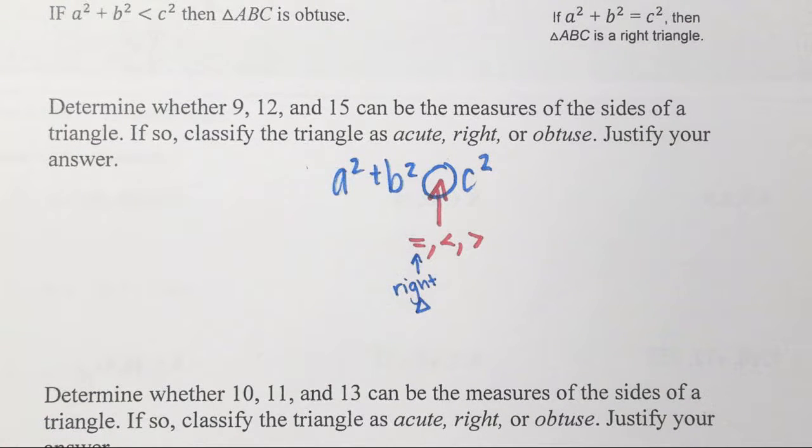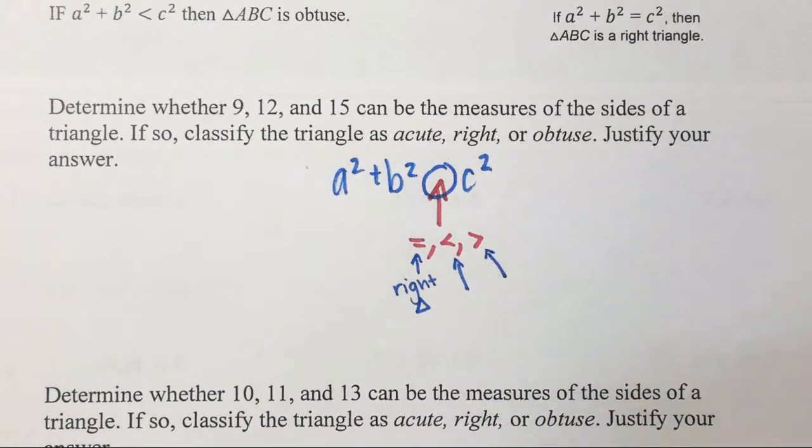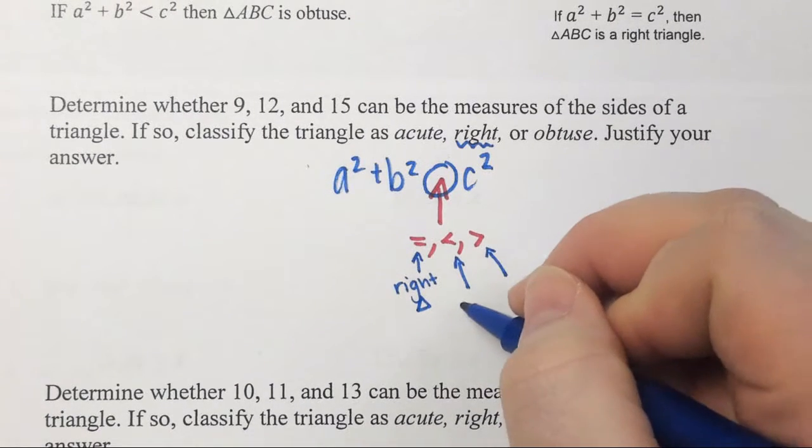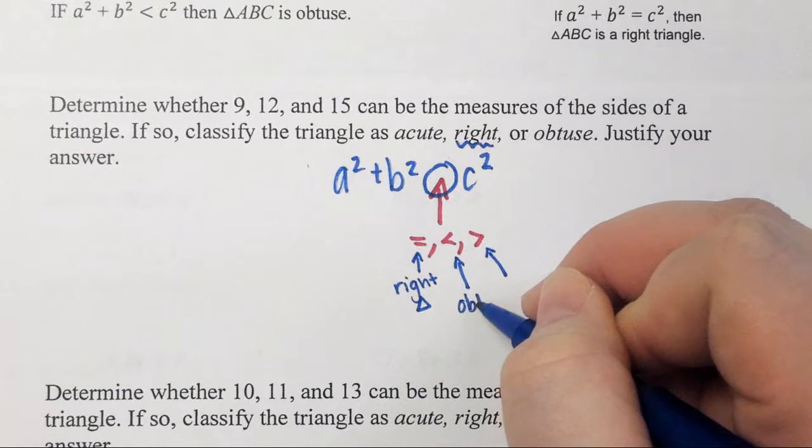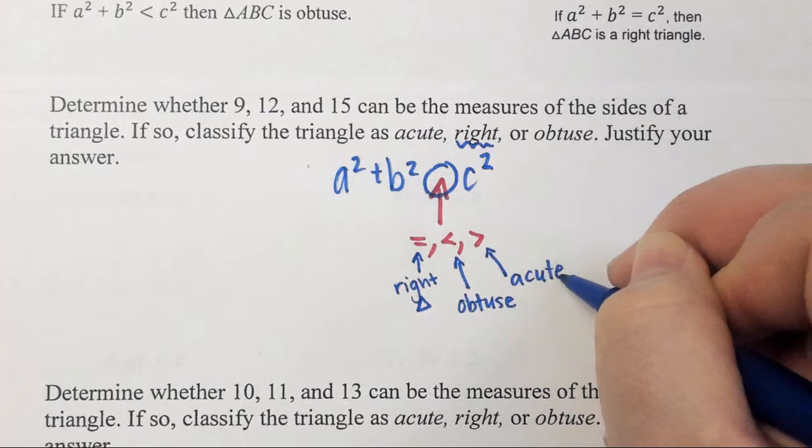Using the equal to on the first day. And then yesterday, if it wasn't equal, we just said no. Today, we're going to do one step further. If it's not equal, we're going to decide whether to use the less than or the greater than. Which would you assume goes with an acute triangle, the less than or the greater than? It would make sense. Acute, less than. I get it. It's the opposite of what you think. Less than actually goes with an obtuse. Greater than actually goes with an acute.